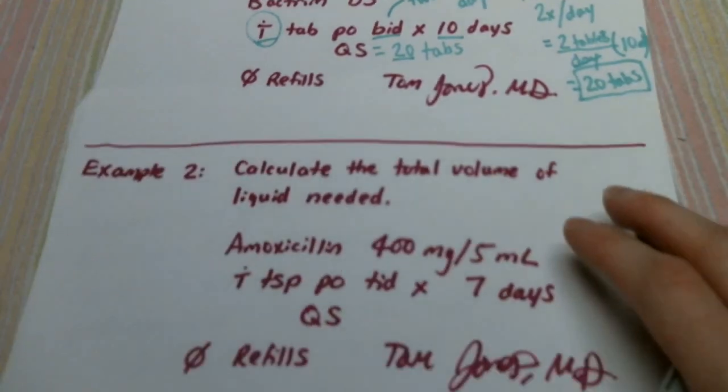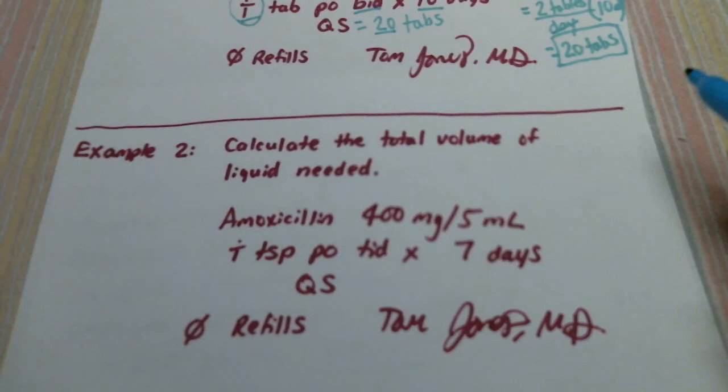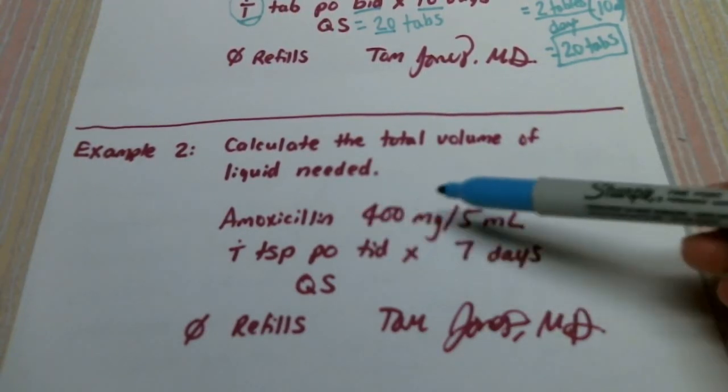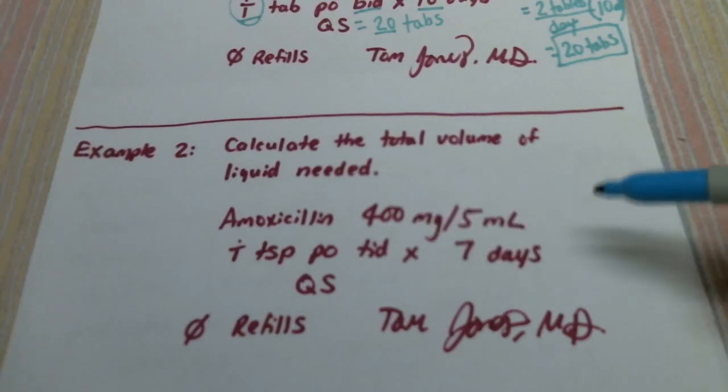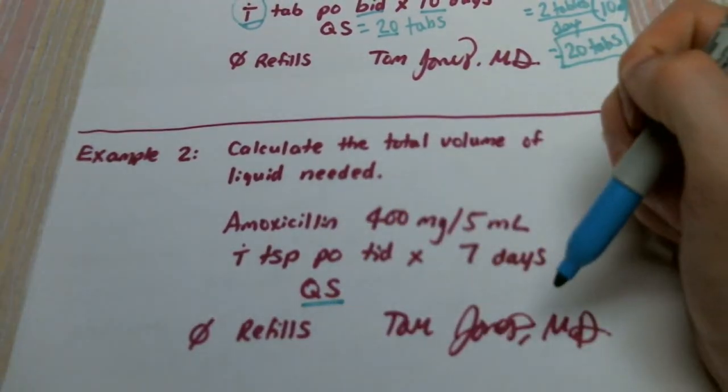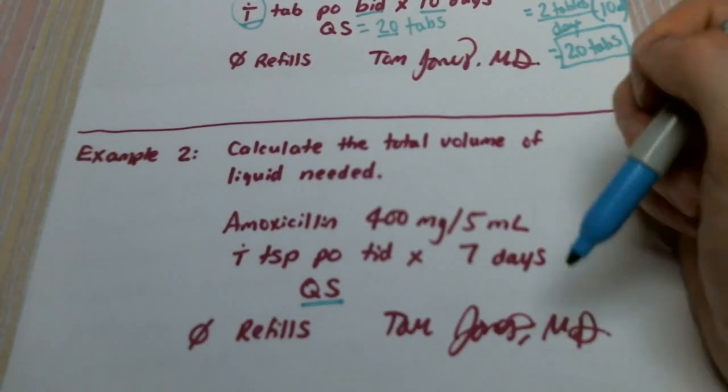Let's take a look at another example. This is a pediatric example. Here we have a child taking amoxicillin 400 milligrams per 5 mLs. The child's taking one teaspoon PO TID by seven days and again we need to figure up how much we need. QS means quantity sufficient, there are no refills, and the prescription is written by Dr. Tom James.